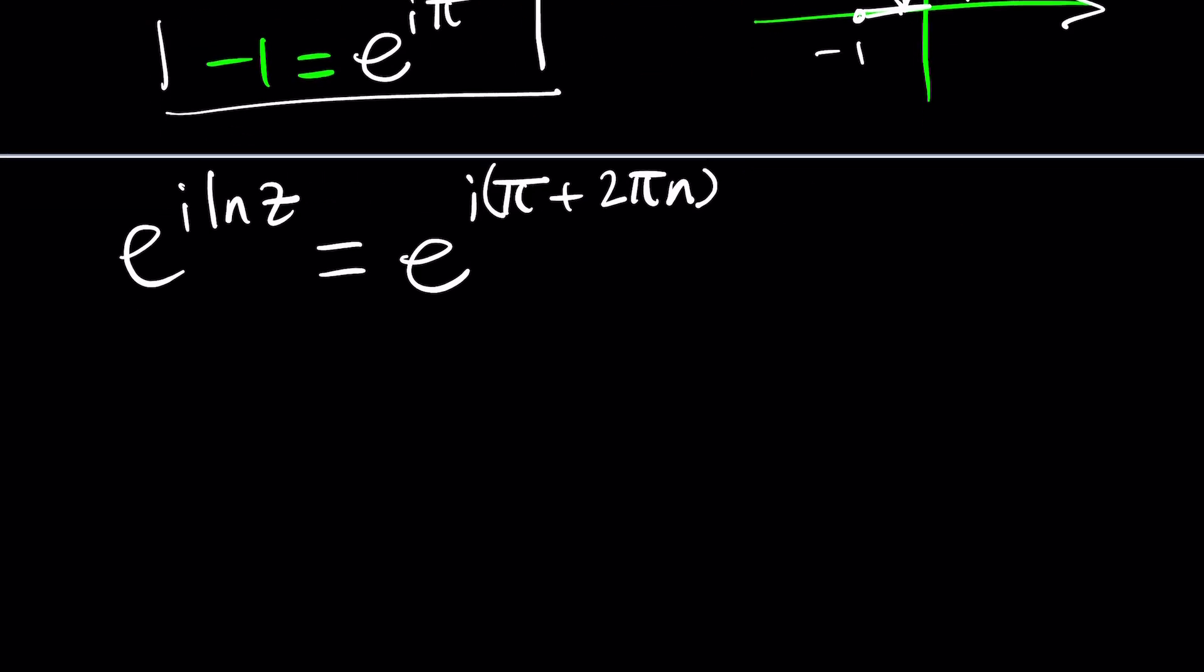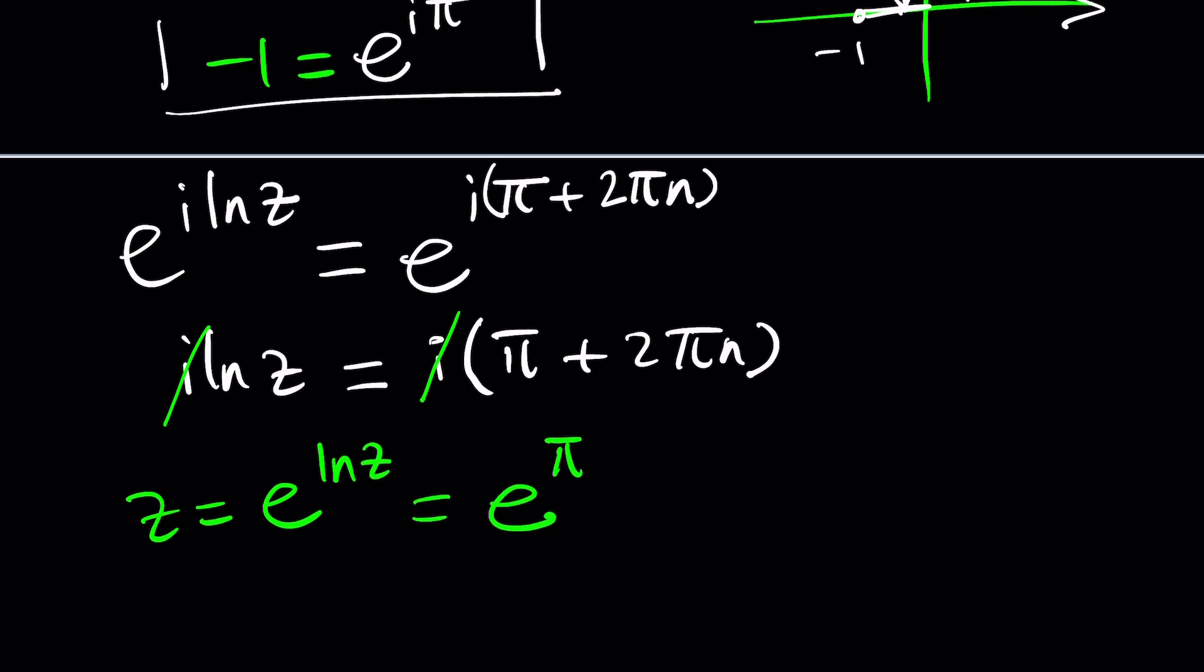Now since we have e's on both sides, we can go ahead and natural log both sides, and that will give us i ln z equals i times pi plus 2 pi n. And then i cancels out, it's not zero, and we end up with ln z. But we're not looking for ln z, we're looking for z, and we know that z is equal to e to the power ln z, right? So z would be e to the power pi plus 2 pi n, right? That should be the answer for z.